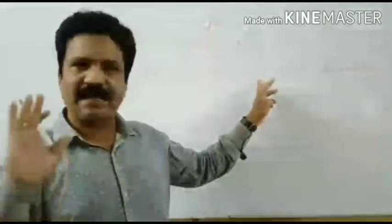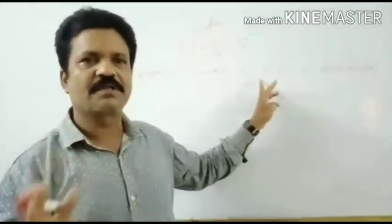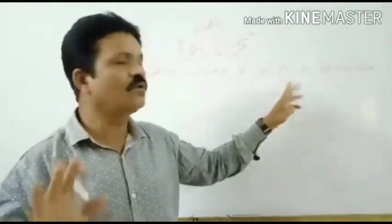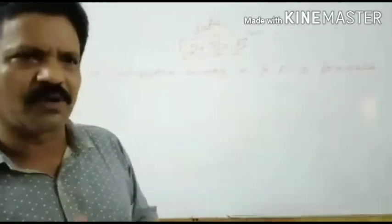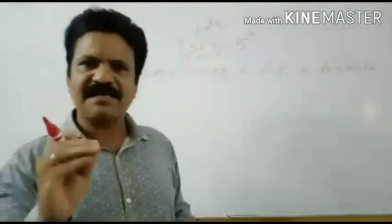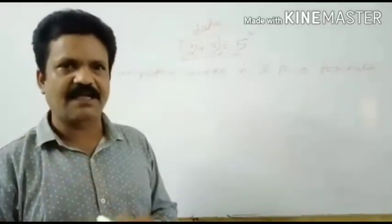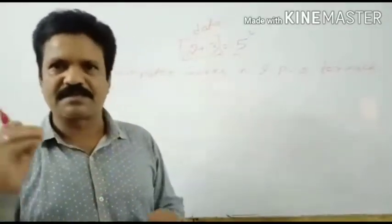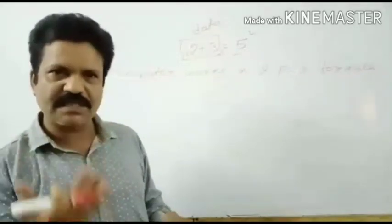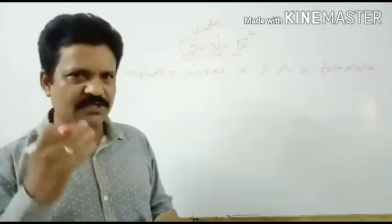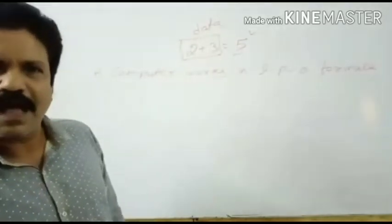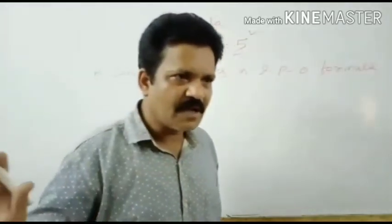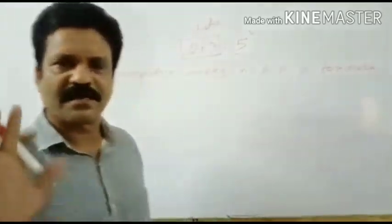First line is Input, next is Processing, then Output. How a computer works: a computer works in IPO formula. First it accepts data from the input device, then processes the data. After processing, it shows the result on the output device.